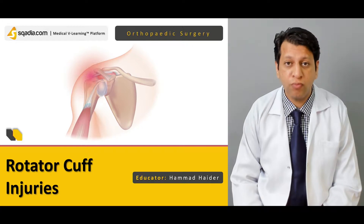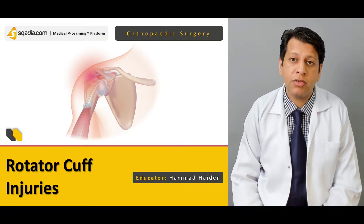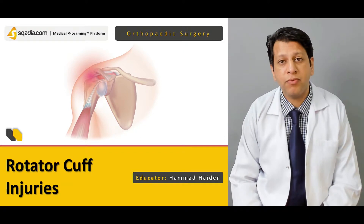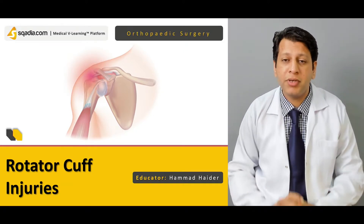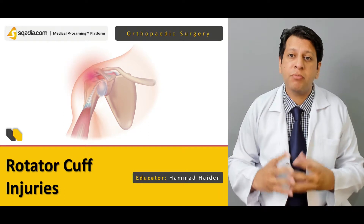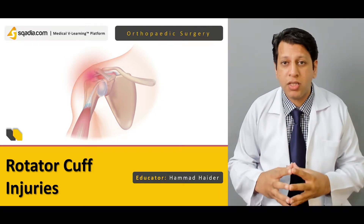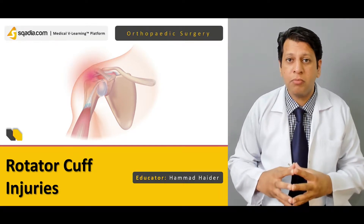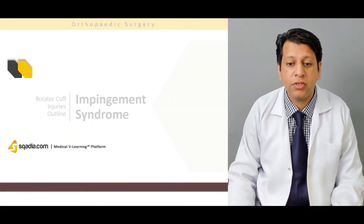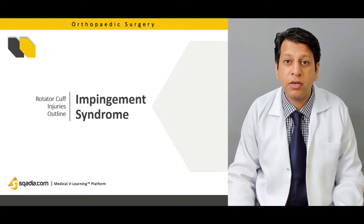The shoulder is a joint which has a lot of movement, but this movement comes at the cost of some form of instability as well. We will be discussing the anatomy and briefly the pathologies which can occur with the shoulder and why they are important, beginning first with the impingement syndrome.